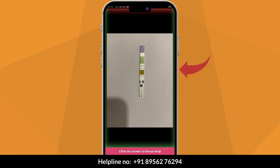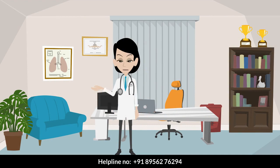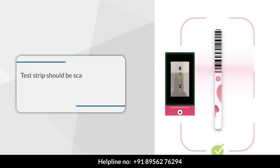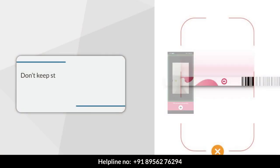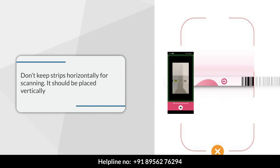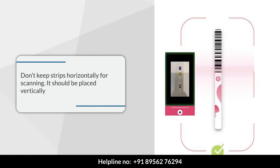If any side shows red color, move the camera accordingly. Once all sides are green, click the image of the strip. The test strip should be scanned by keeping the complete strip vertically aligned in the bounding box. Do not keep strips horizontally for scanning — it should be placed vertically.